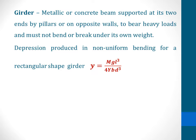The depression produced by non-uniform bending for a rectangular shaped girder or beam is given by: small y equals mgl³ divided by 4Ybd³, where m stands for the mass of the load, l stands for the length of the beam, capital Y stands for the Young's modulus of the material, small b stands for the breadth of the beam, and small d stands for the thickness of the beam.